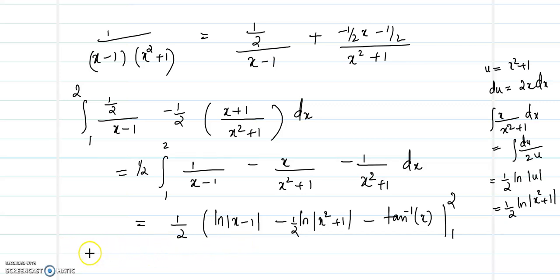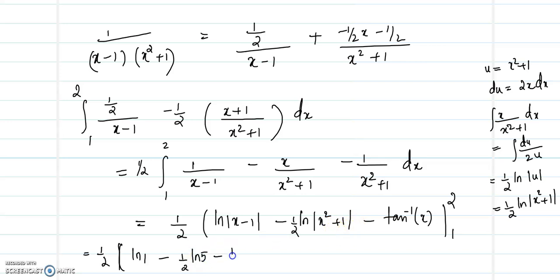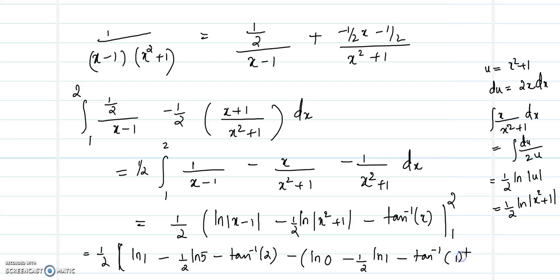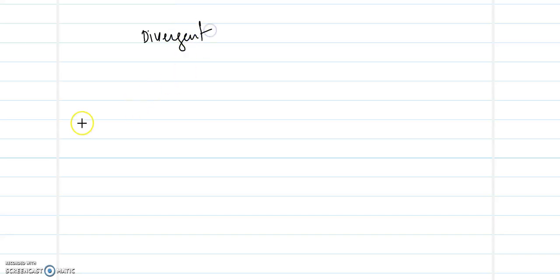Applying the limits, at x = 2 we get log(1) - (1/2)·log(5) - tan⁻¹(2), and at x = 1 we encounter log(0), which is not defined. Therefore the integral will be divergent in this case.